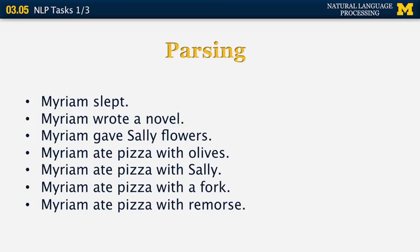Let's look at some simple sentences in English — we'll discuss context-free grammars and parsing in more detail later. In all these sentences, we have a subject, which is Miriam, and we have a verb. Most sentences have a subject and a verb. The verbs here are very different. The first verb is 'slept,' which is an intransitive verb because it doesn't take a direct object.